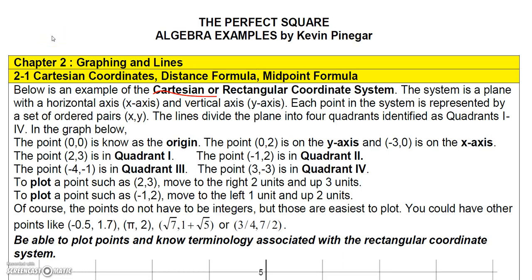Today we're going to talk about graphing and lines, but first we need to talk about the Cartesian coordinate system. This grid is called the Cartesian or rectangular coordinate system. It consists of a horizontal axis called the x-axis and a vertical axis called the y-axis. Each point in the system is represented by a set of ordered pairs, where the first value represents the x value and the second represents the y value. These two axes divide the plane into four quadrants.